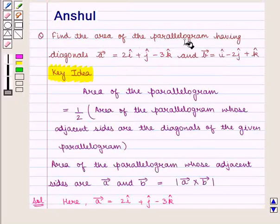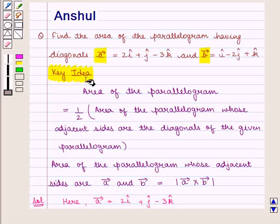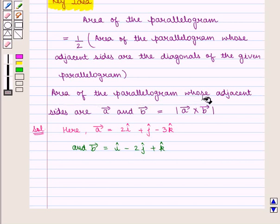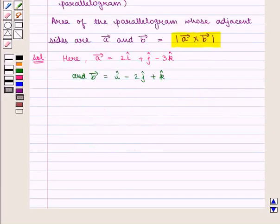We need to find the area of the parallelogram having diagonals Vector A and Vector B. From the key idea, the area of the parallelogram whose diagonals are given is equal to 1 by 2 into the area of the parallelogram whose adjacent sides are the diagonals. The area whose adjacent sides are Vector A and Vector B is given by modulus of Vector A cross Vector B. So now we shall find Vector A cross Vector B taking them as adjacent sides.